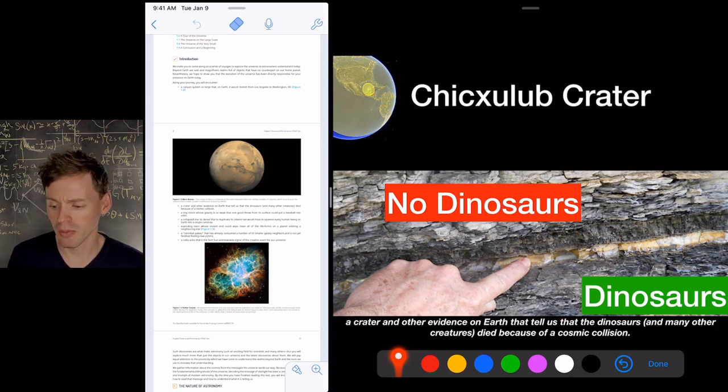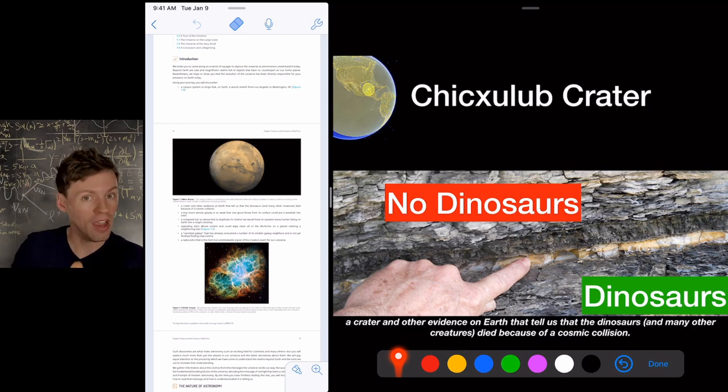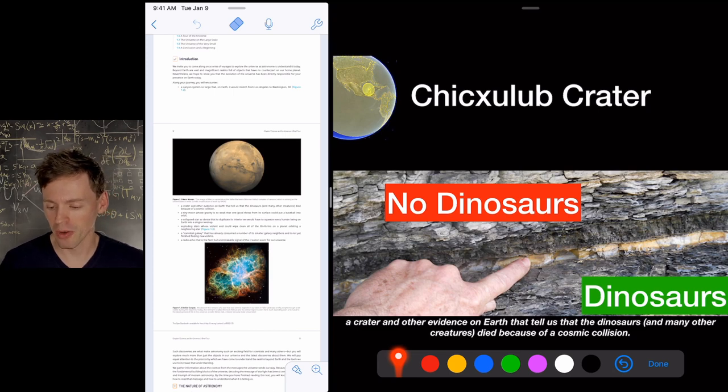For example, the Chicxulub Crater, which killed the dinosaurs 65 million years ago, and this gentleman is pointing at the KT boundary line, which is all the deposits from the asteroid. When it hit, it ejected a bunch of material up, and as the dust settled, it settled into this thin layer here. So in geologic time, the layers preceding that white line, that's when dinosaurs lived, and then after that there were no more dinosaurs anymore. So we're going to learn about craters and what they tell us about the surface.